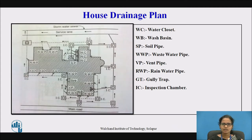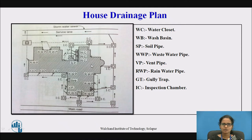This is the drainage or house drainage plan. WC is the water closet, WB is the wash basin, SP is the soil pipe, then you have the waste water pipe, the vent pipe, the rain water pipe, the gully trap, and the inspection chamber. Overall, all of these should be included in the house drainage pipe.